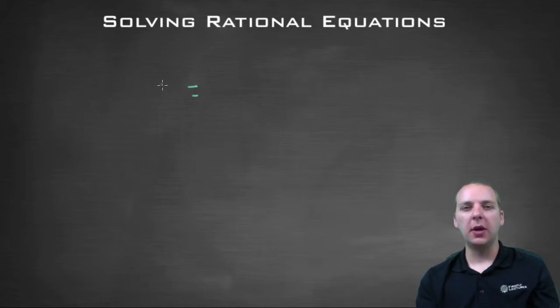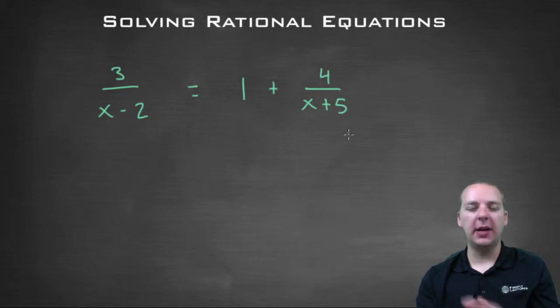For example, I'll just make one up here: 3 over x minus 2 equals 1 plus 4 over x plus 5. I just made that up at random. I don't know how nice the solutions are, but it's an example of a rational equation.